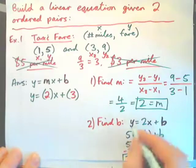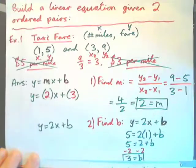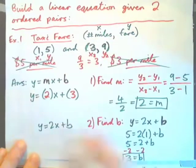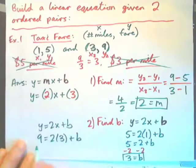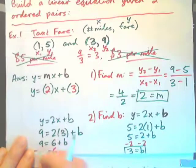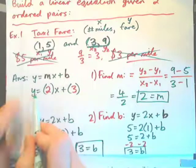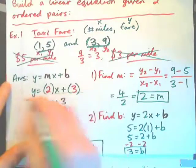As an interesting point, at the stage y equals 2x plus b, I could also use the other point (3, 9). Plugging nine in for y and three in for x: nine equals six plus b. Subtract six from both sides and again b equals three. Whether I plug in this point or that point, I still get b equals three, and the answer is y equals 2x plus three.